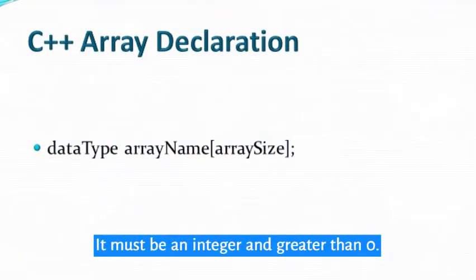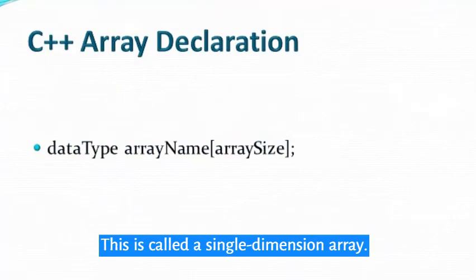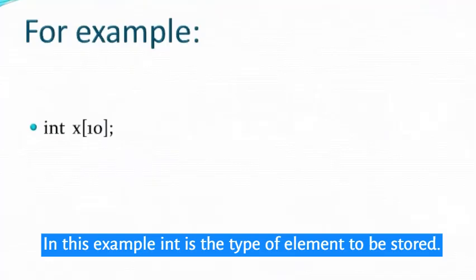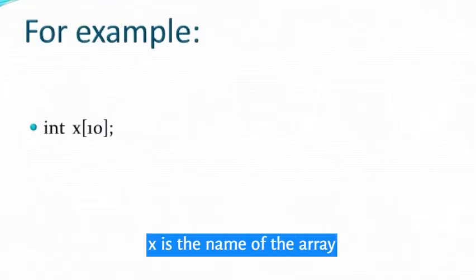It must be an integer and greater than 0. This is called a single dimension array. In this example, int is the type of element to be stored, X is the name of the array, and 10 is the size of the array.